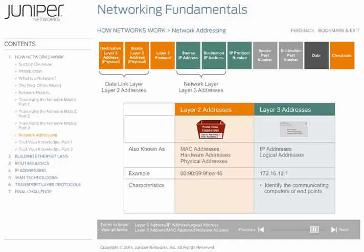Because the data source and ultimate destination always remain the same, Layer 3 addresses never change. Conversely, the destination and source Layer 2 addresses identify the stops made along the way, and not the communicating computers or endpoints. Layer 2 addresses change with each stop along the route to the final destination. Don't worry if you still have questions about these two types of addressing — we revisit both types in more detail later in the course.